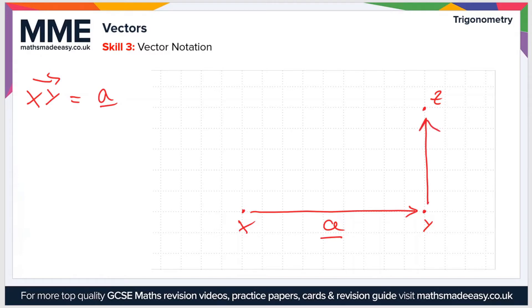From Y to Z, let's call this the vector B. Again, we can write this as YZ with an arrow over the top. That is the same as B. And then let's call XZ the vector C. So XZ equals C.